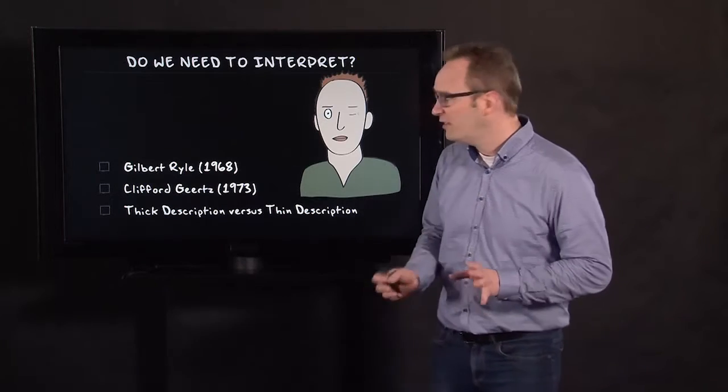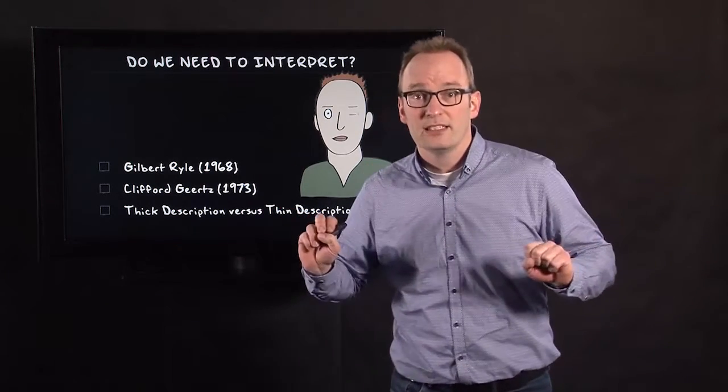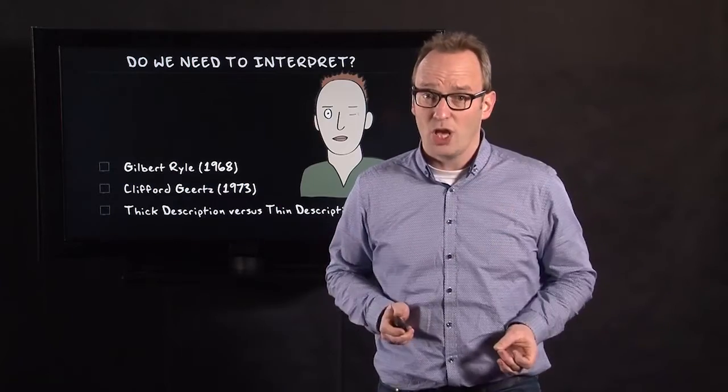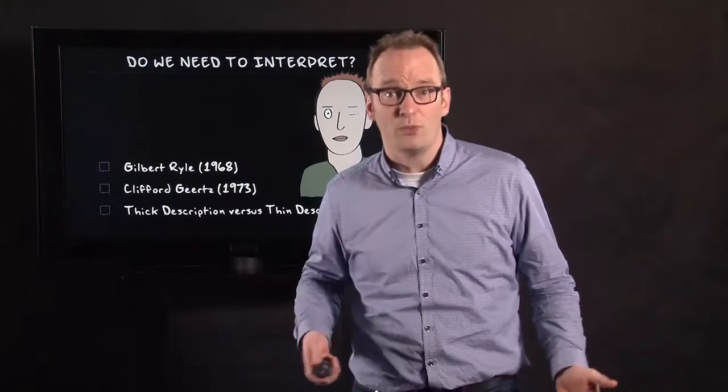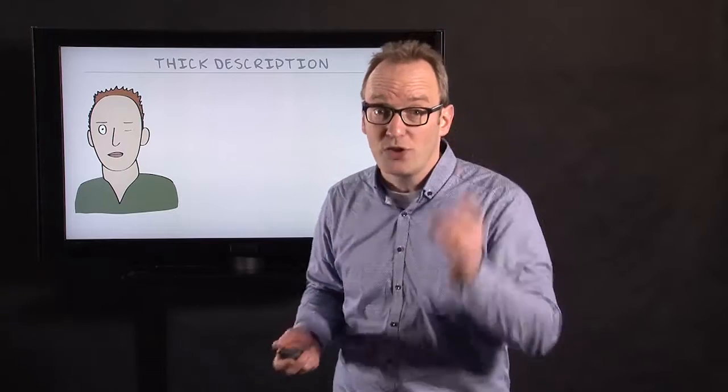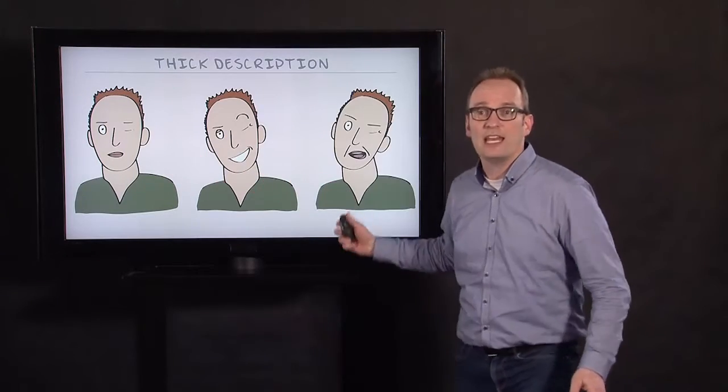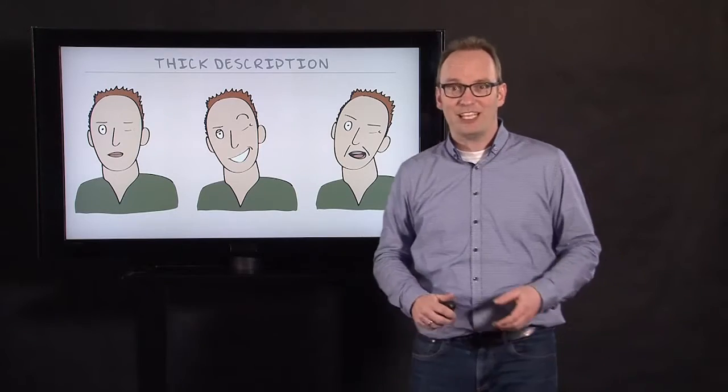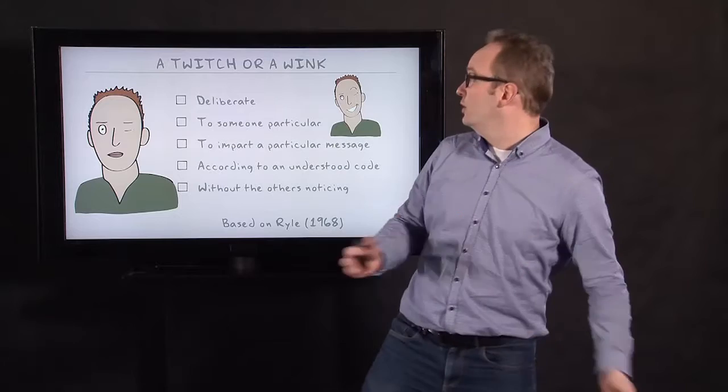The idea is that you can describe something thinly as a contraction of the eye, but is it enough? No, it's not enough. We need more because we do a lot more in different situations when we contract the eye. For instance, you see here the twitch, you see a wink, and here you see the parody of a wink.